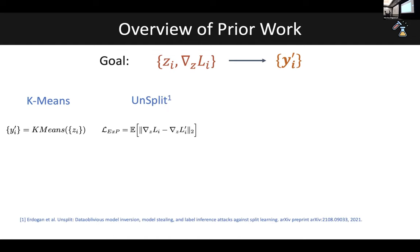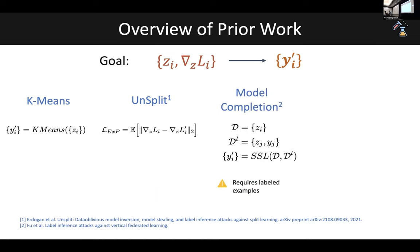Unsplit is another recent concurrent work proposed to uncover private labels. Similar to our work, it uses the gradient matching objective in the optimization process, but unlike our work it lacks the additional regularization terms we use. Model completion is another recent attack that works under the assumption that the adversary has access to a few labeled examples of the embedding — some labels corresponding to some embeddings are known. Under this assumption, they use semi-supervised learning to estimate the labels corresponding to other embeddings.